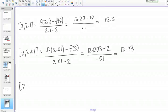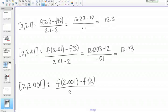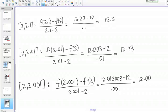Finally, 2 to 2.001, and that's f of 2.001 minus f of 2 over 0.001. That's 12.003.